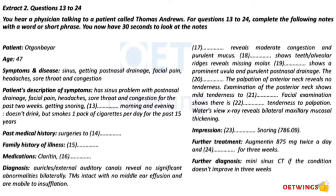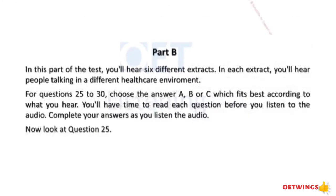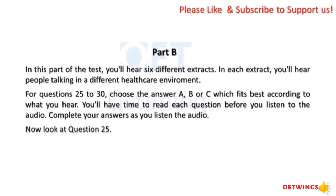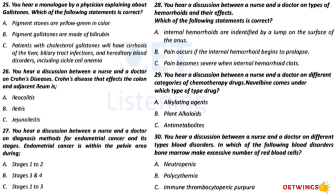That is the end of Part A. Now look at Part B. Part B: In this part of the test, you will hear six different extracts. In each extract, you'll hear people talking in a different healthcare environment. For questions 25 to 30, choose the answer A, B, or C which fits best according to what you hear. You will have time to read each question before you listen to the audio. Complete the answers as you listen. Now look at question 25. You hear a monologue by a physician explaining about gallstones. Now read the question.